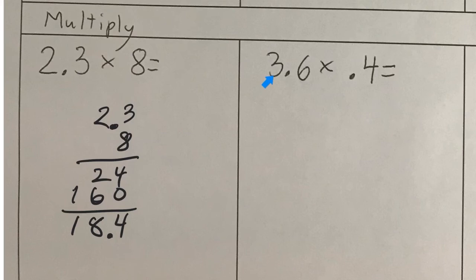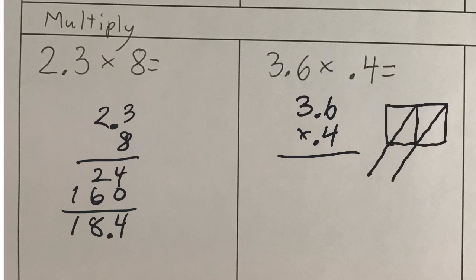Now, we have 3.6, or 3 and 6 tenths, times 4 tenths. I'll write it like this. But again, just multiply it any way you want at first. In fact, I like the lattice method. Or some of you do, at least. So, why don't we do that? And you'll find you get 144. Now, this is where we have to do this trick. How many numbers are after the decimal point? We have 1, 2 numbers after the decimal point. So, from here, we move in 2 spots. 1, 2. And that's where our decimal point goes.